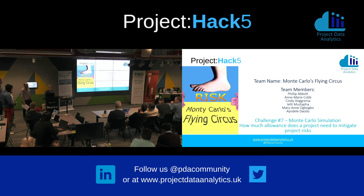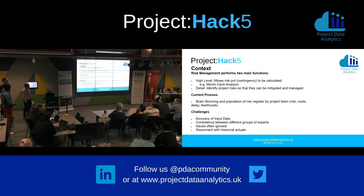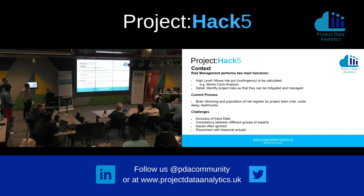We're Monte Carlo's Flying Circus, and we're looking at how much risk you need to set aside on a project. As a project manager, the two things I want to get out of the risk management process are: at a high level, how much risk pot do I need? If my project's 10 million pounds, do I need 500,000 pounds extra or a million? There are a number of ways of doing that, one of which is Monte Carlo analysis.